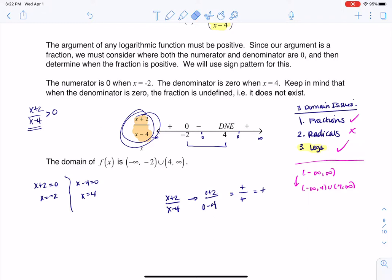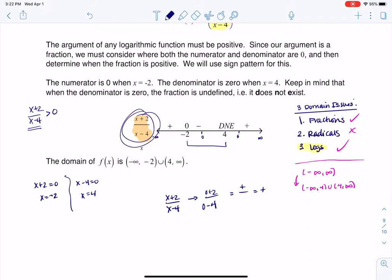This time, I have a positive on the numerator but the denominator is negative, which means ultimately my ratio will be negative. That's why I have this negative symbol here. This tells me that if I plug in any x value between negative 2 and 4, I get a negative number for my argument.